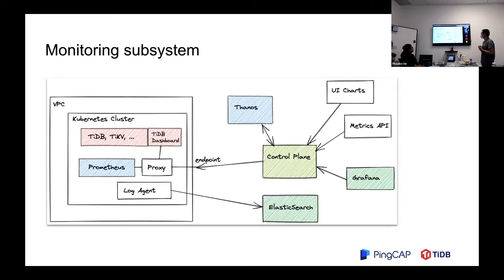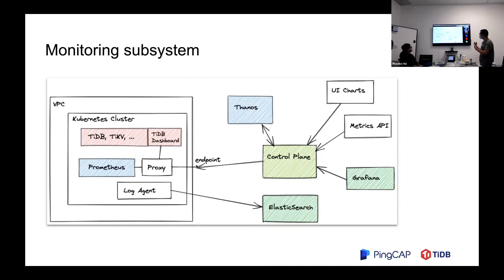For the monitoring subsystem: customers have access to UI charts and metrics, which go to the control plane. We also have Grafana and Elasticsearch for debugging by our SRE. Long-term storage of metrics are stored in Thanos. The control plane uses endpoints to connect into the VPC, and it relays the TiDB dashboard. Some of you may know the TiDB dashboard — it's a management portal for on-premises TiDB deployment. Here, we are doing the relay. We also have a Prometheus deployment for metrics.